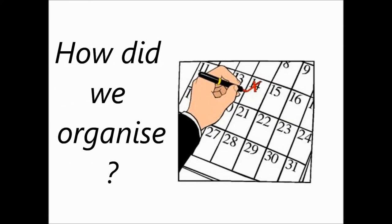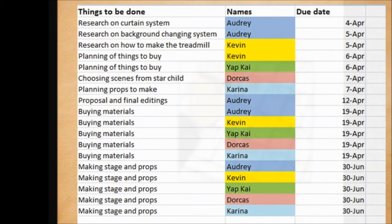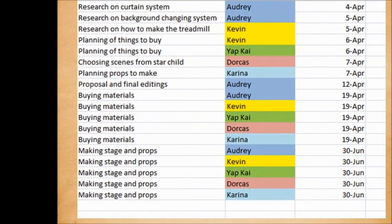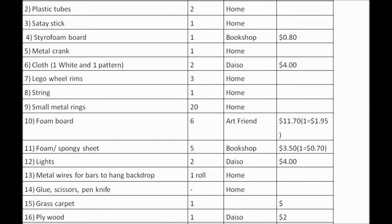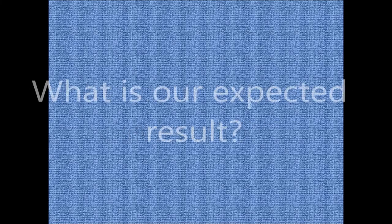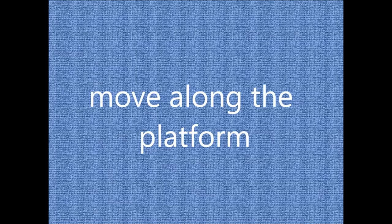How did we organize? We charted a to-do list with all our roles and deadlines. We also planned what materials to pack. What is our expected result? We hope that the product will allow smooth transitions between scenes so as to have a successful play. We also hope that the viewers will be impressed by the concept of the stage as they will get to experience the new transition as the props move along with the moving platform.